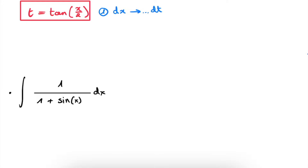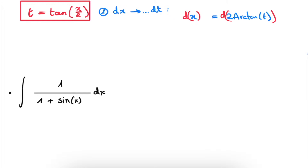To find dx, we note that from our substitution, x divided by 2 equals the arctangent of T, which means x equals 2 times the arctangent of T. Differentiating both sides, we find that dx equals 2 times 1 over 1 plus T squared dt. This 1 over 1 plus T squared comes from the differential of the arctangent of T, and this is the first formula we can directly use in our integration.